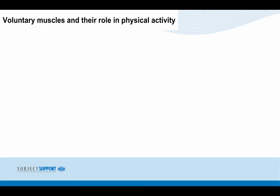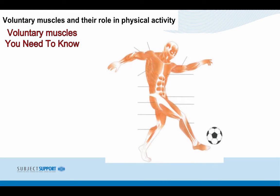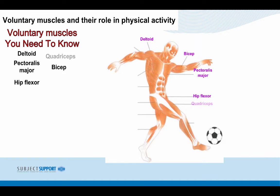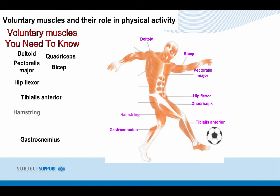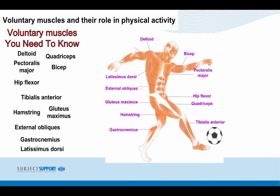Voluntary muscles you need to know: the deltoid, the bicep, the pectoralis major, hip flexor, quadricep, tibialis anterior, gastrocnemius, hamstring, gluteus maximus, external obliques, latissimus dorsi, and finally the tricep.